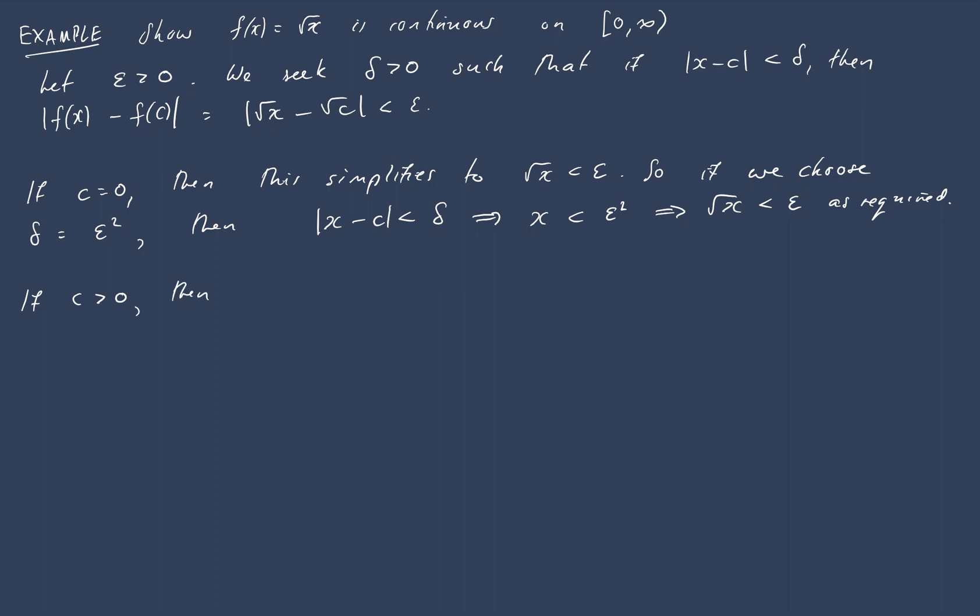If c is positive, then we'll start with that inequality. This time it doesn't simplify anywhere from here, but the key with this one is that we can multiply it by the conjugate of itself. So I'm going to multiply it by this one here, and we'll see why we do this in a second.